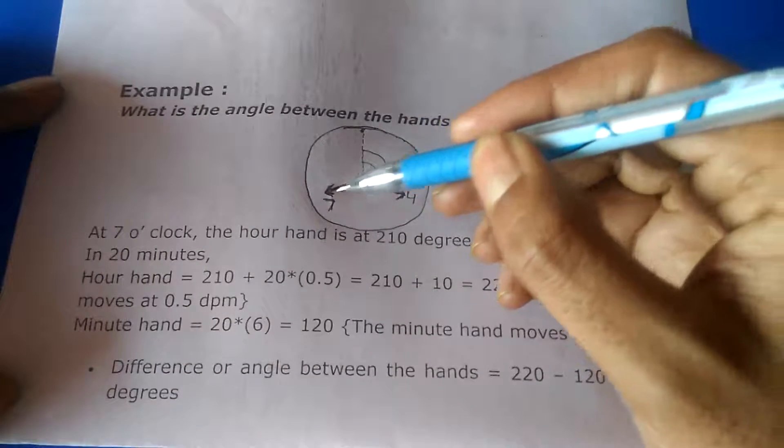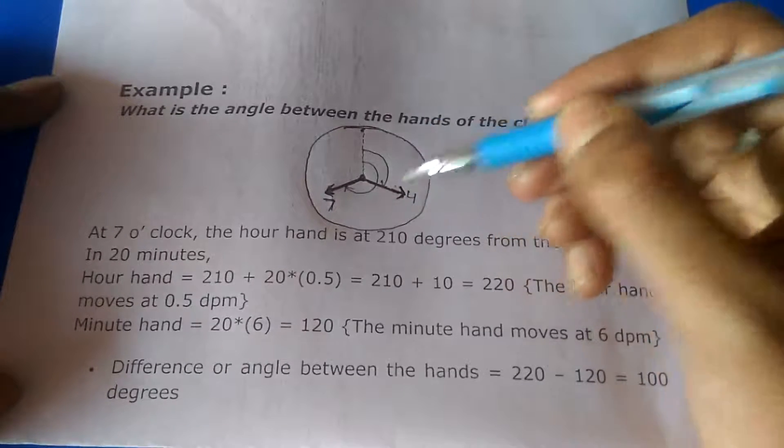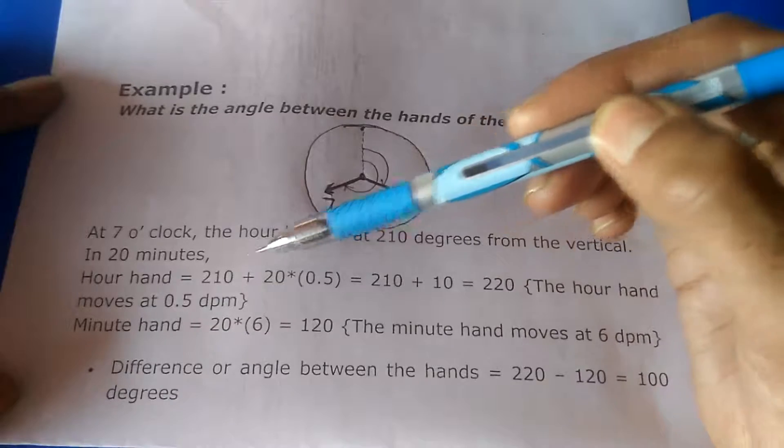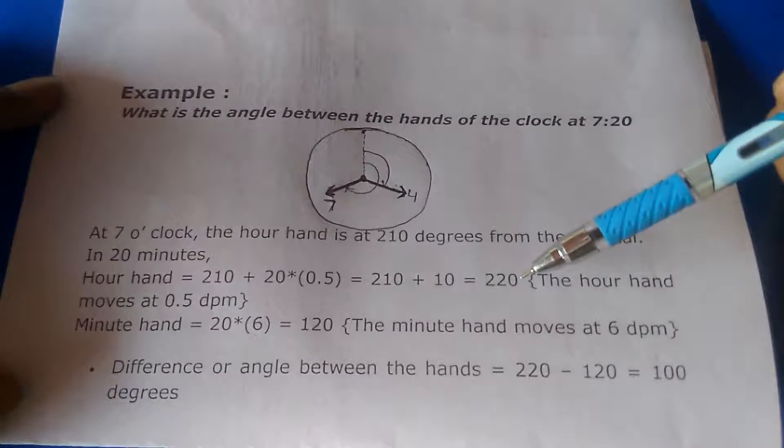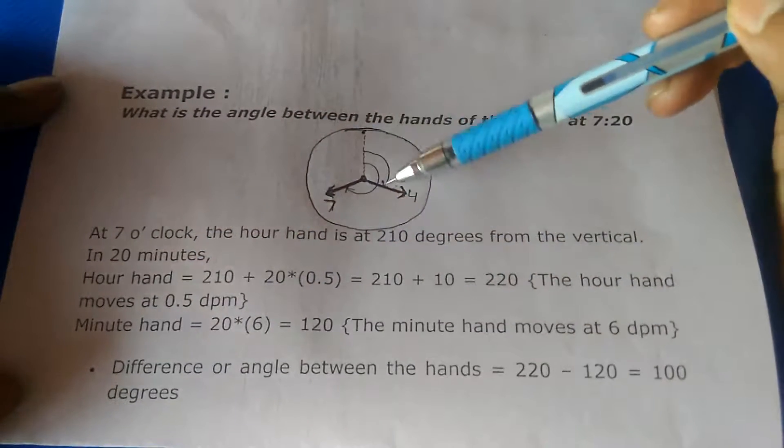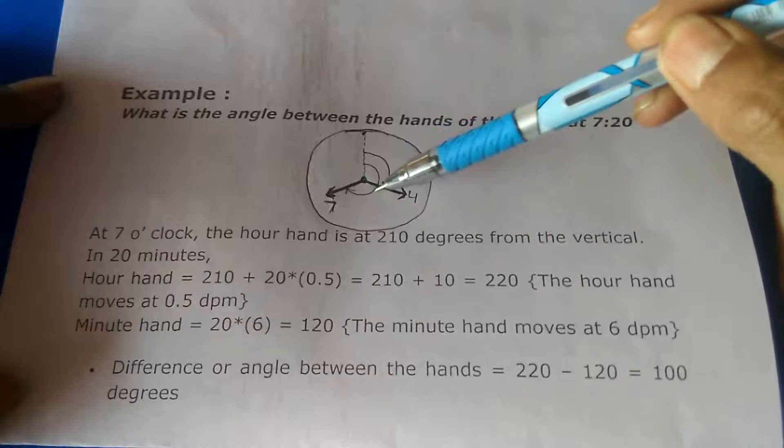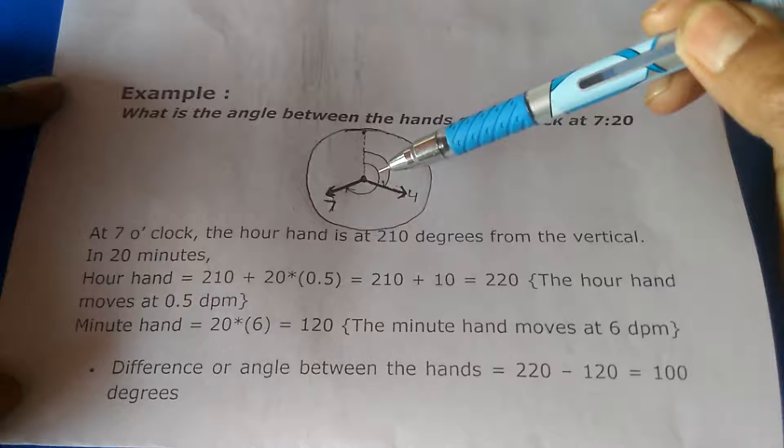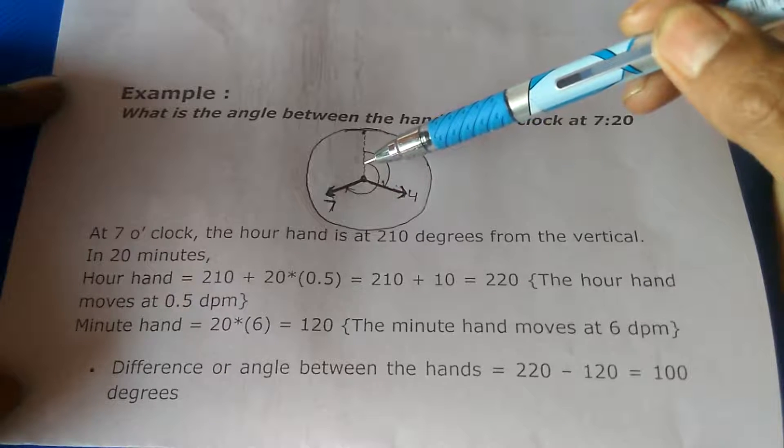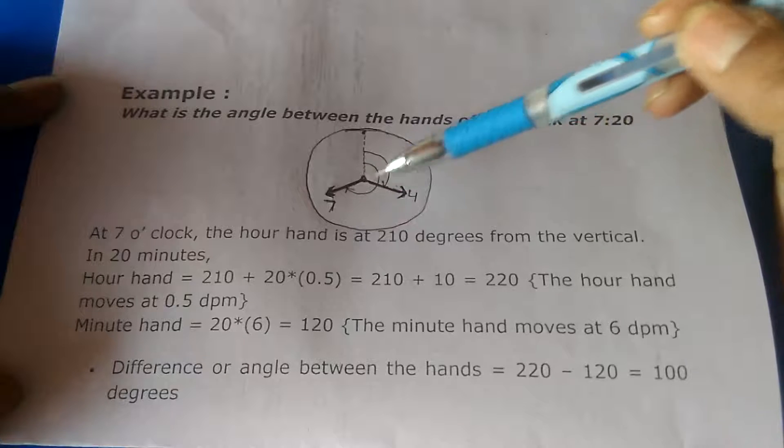At 7:20, the hour hand is at 210 degrees from the vertical, because the hour hand has to move 7 hours plus 20 minutes. That's 7 times 30 plus 20 times 0.5, which equals 220. On the other hand, the minute hand has to move only 20 minutes, meaning 20 times 6 equals 120. We have to find the angle between these two hands, which is the difference between them.